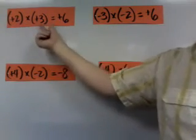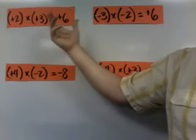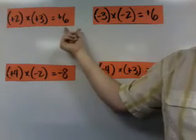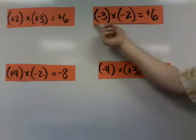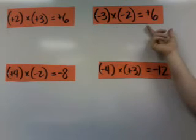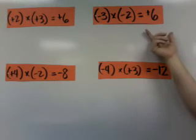Positive 2 times positive 3 is positive 6. Signs are the same, the answer is positive. And over here, negative 3 times negative 2 is positive 6. The signs are the same, the answer is positive.